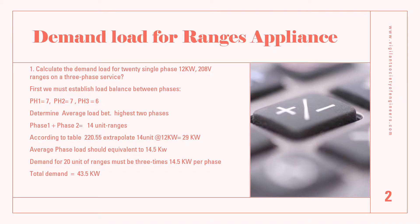We're going to calculate the demand for 20 single-phase 12 kilowatt, 208-volt ranges on a three-phase service. For a question like this, we should establish a balance basis. We have 20 units and we're going to spread them evenly between phase one, two, and three — so phase one gets seven units, phase two gets seven, and phase three gets six.